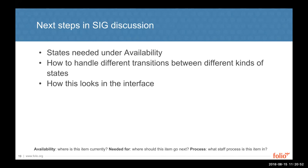Folio being an agile project, we didn't start with the full list of states—we're introducing new states as they come up in discussion. We're also working out how to handle transitions between states and the necessary requirements there. One final thing to discuss is how the interface displays all of this, which provides an opportunity to give a quick tour of the current system—specifically the checkout and check-in interaction—to show the differences in how status currently appears and get an overview of loans in general.